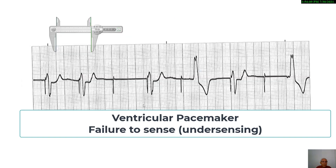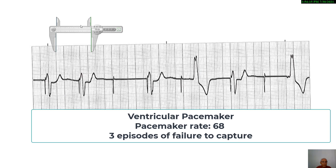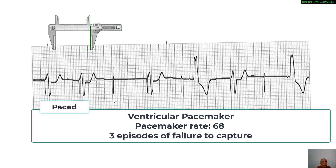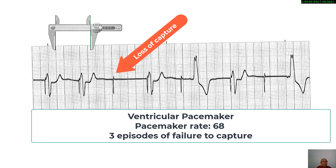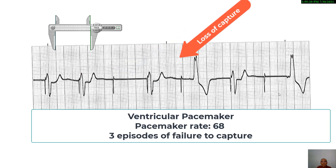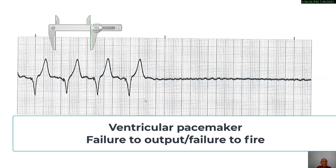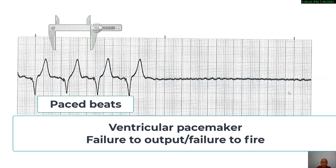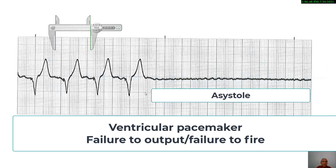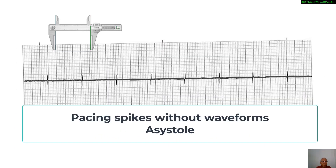In another strip with a ventricular pacemaker set at 68 beats per minute: the first two complexes appear as pace beats, but the third spike has no depolarization wave following it — this is failure to capture, occurring multiple times in the strip. In yet another strip, the first four beats are paced ventricular beats, but then there is no further activity, resulting in asystole — this is failure to output or failure to fire. A final strip shows pacing spikes without any corresponding waveforms, indicating asystole secondary to failure to capture.